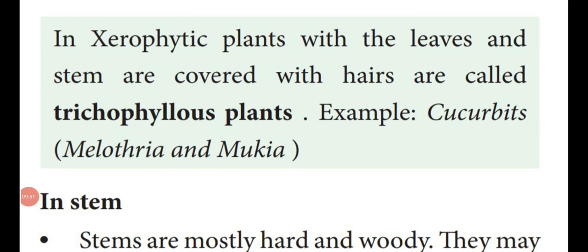In xerophytic plants, the leaves and stems are covered with hair-like outgrowths called trichomes. That type of plant is known as a trichophyllous plant — 'phyllus' means leaf. Examples of trichophyllous plants include the Cucurbitaceae family: pumpkin, bottle gourd, bitter gourd, watermelon, cucumber, and also Melothria and Mukia.